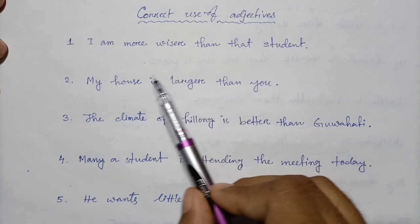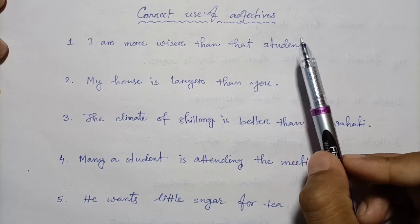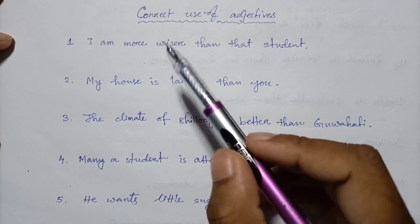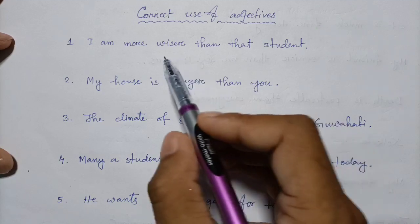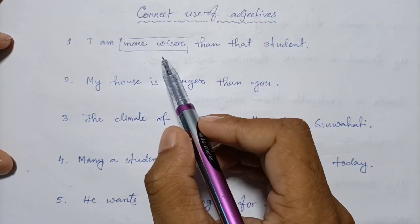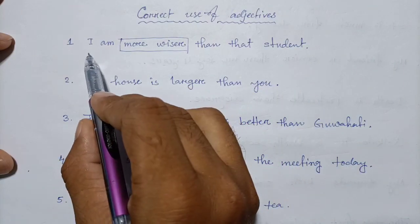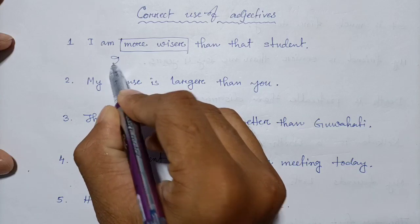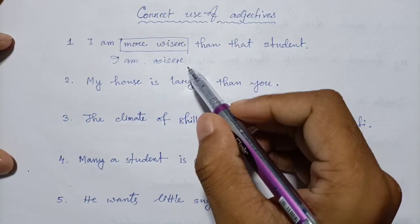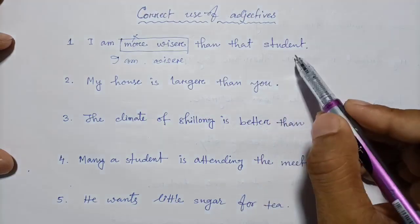So this sentence has a mistake. We need to identify it — 'more wiser' is a dual comparative, which is wrong. So the correct sentence should be: 'I am wiser than that student.' Wise, wiser, wisest — so 'more' should not be used here.